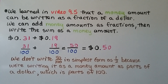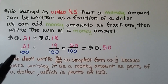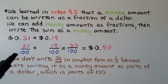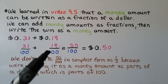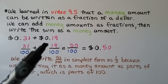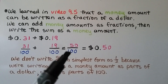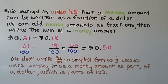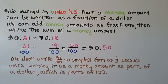We learned in video 9.5 that a money amount can be written as a fraction of a dollar. We can add money amounts as fractions, then write the sum as a money amount. We have 31 cents plus 19 cents. We can write this as 31 hundredths plus 19 hundredths, and add 31 plus 19, which equals 50. We have 50 hundredths, which we can write as 50 cents. We don't write 50 hundredths in its simplest form as 1 half, because we're writing it as a money amount as parts of a dollar, which is parts of 100.